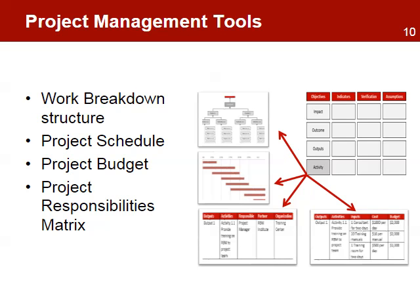The use of project management tools helps manage implementation of the project intervention. These management tools are: the work breakdown structure or WBS, that describes all the project activities; the project schedule with the estimates for the completion of each activity; the budget with the cost estimates for each activity; and the responsibilities chart with identification of the people responsible for doing the project work. These tools use information from the log frame activity level.